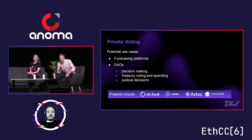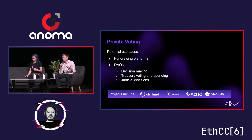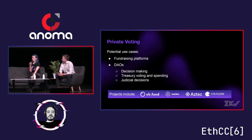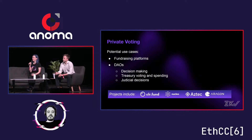Private voting is something which has been spoken about much more than it's been implemented, but there are great examples already — CLR Fund for grants and fundraising, and some DAOs have done examples of private voting. It's a use case that really makes sense if you want to, for example, spend from a treasury and don't want to be front-run with on-chain trading. Just recently, Aztec and Aragon collaborated with the Nouns DAO, so for the first time you're seeing an NFT DAO actually having some sort of privacy incorporated.